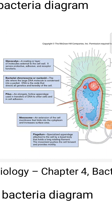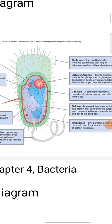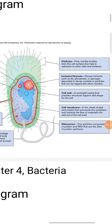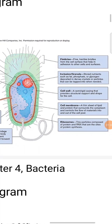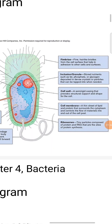Flagellum is responsible for locomotion. Ribosomes are particles composed of protein and RNA that are the sites of protein synthesis. The cell membrane surrounds the cytoplasm and controls the flow of materials into the cell. Cell wall provides support and shape for the cell.